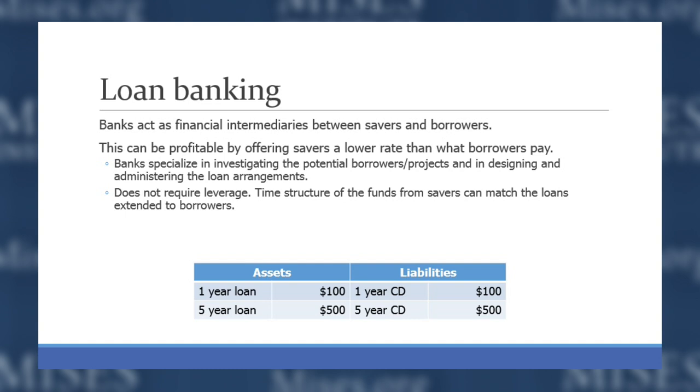Same with deposit banking — banks can stay liquid by charging fees for storing people's money and keeping it safe. This seems foreign to us because we're used to free checking accounts. The reason banks can offer free checking is because they're not separating loan banking and deposit banking — they're combining the two. But we can imagine this setup in two different buildings, or separated by a brick wall, where deposit banking is on one side and loan banking on the other. There doesn't have to be a mixing of these two functions.